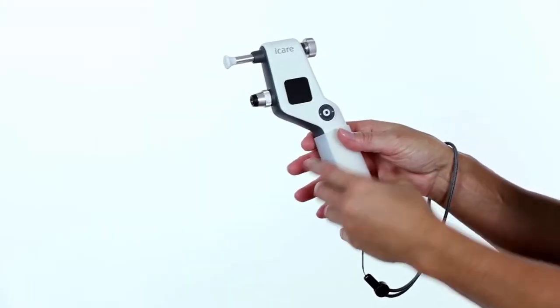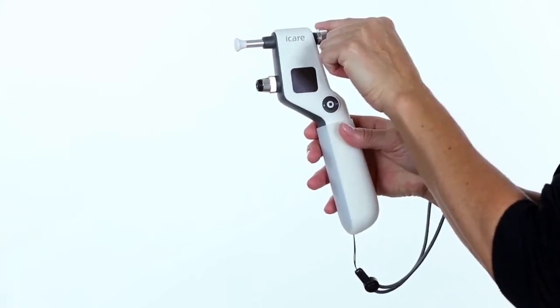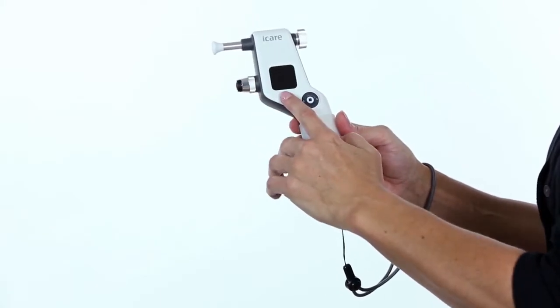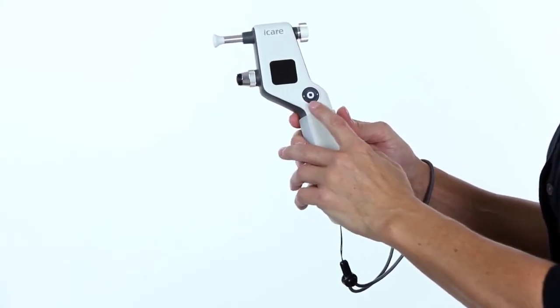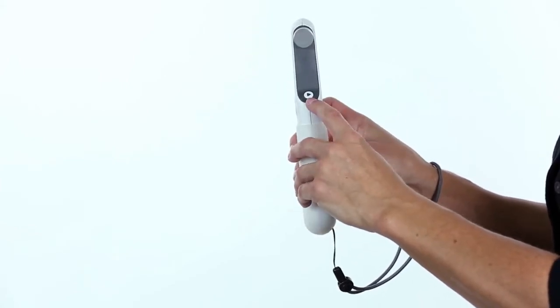Parts of the IC100. This is the forehead support, forehead support adjusting wheel, probe base and collar, display, select and navigation button, and the measure button.